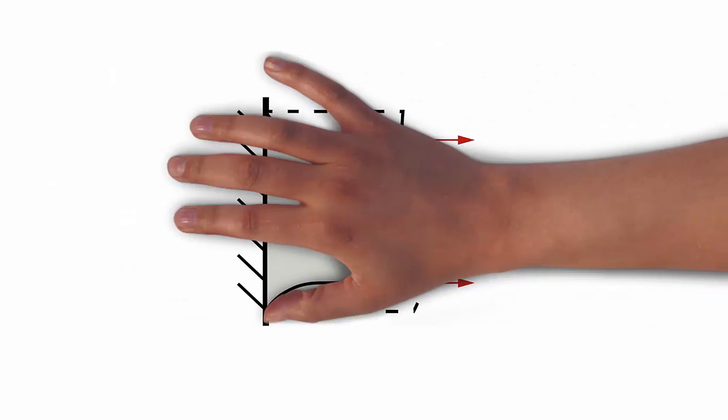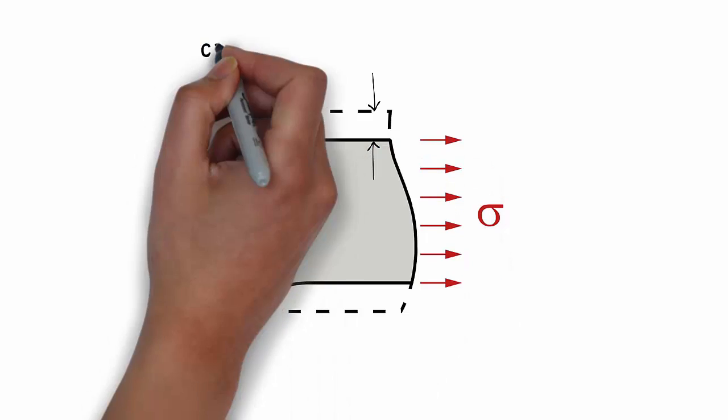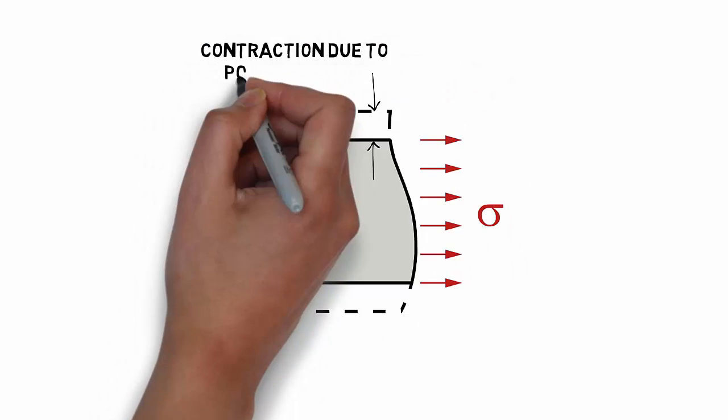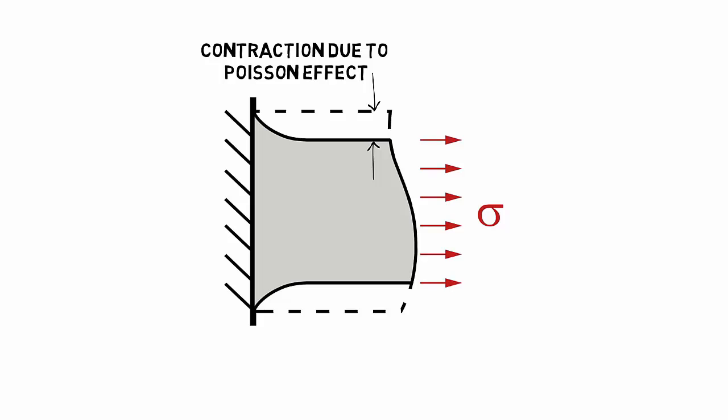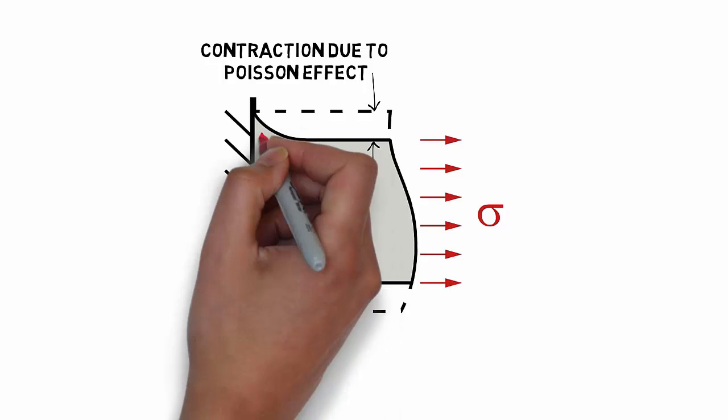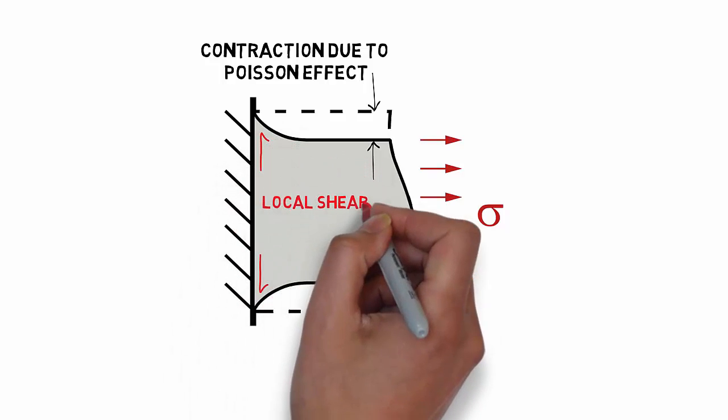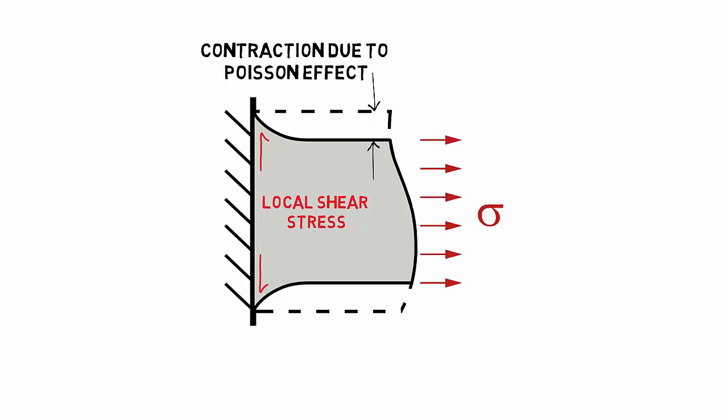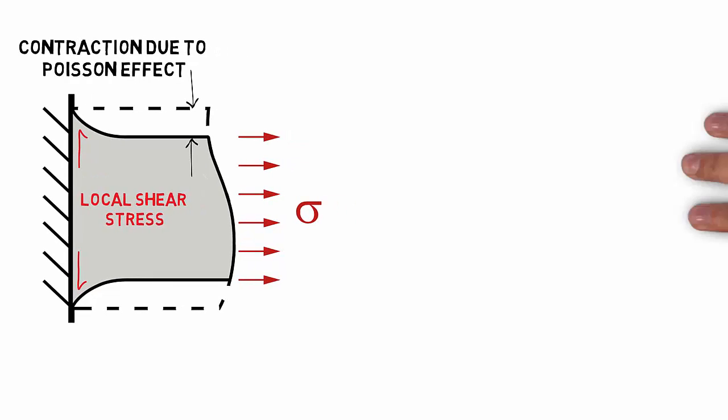If we take a closer look at the built-in end of the rod, it is easy to see that this type of boundary condition locally constrains the lateral deformation of the rod. This restriction in deformation will result in shear stresses locally that eventually redistribute to a state of uniform normal stress as you move away from the boundary condition.